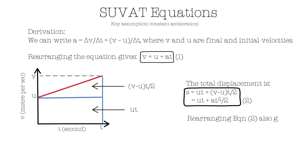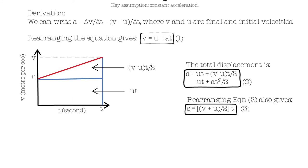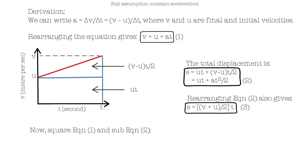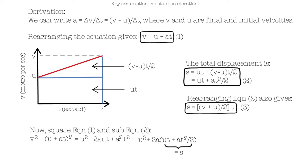If we rearrange the first line of our second equation for displacement, we get our third equation: S equals U plus V over 2 multiplied by T. Now let's square equation 1 and substitute equation 2. If we square V equals U plus AT, we get U squared plus 2AUT plus A squared T squared. We can simplify this down to U squared plus 2A brackets UT plus AT squared over 2. Here we can see that the bracketed section is equivalent to displacement equation number 2. We can now substitute equation 2 to get our fourth equation: V squared equals U squared plus 2AS.